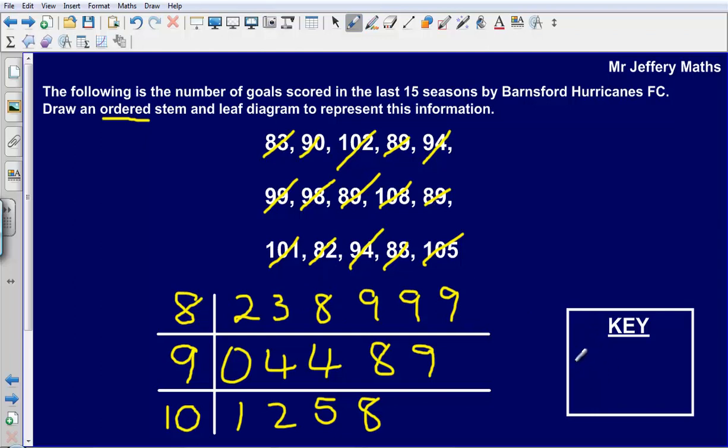When we do this we have to make sure that we have a key. All that we mean by a key is just saying what do these numbers actually represent.